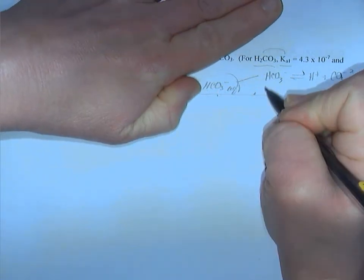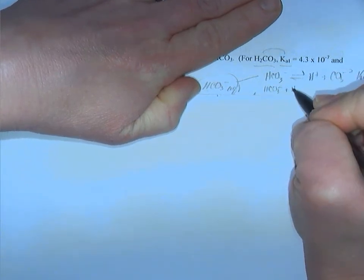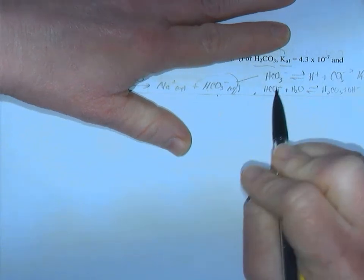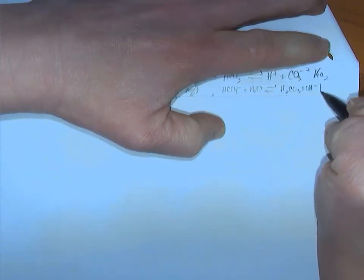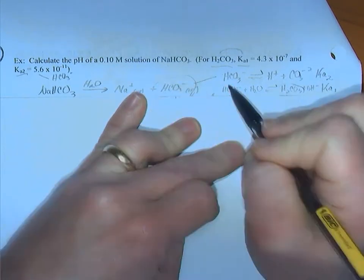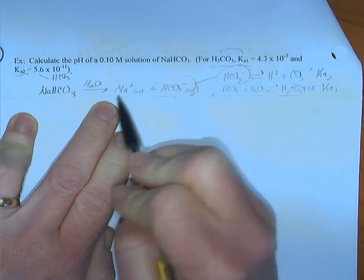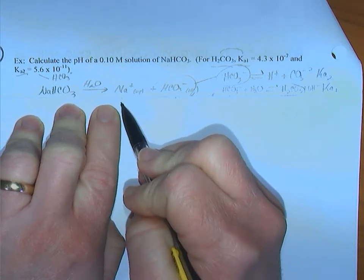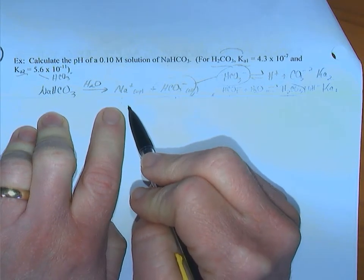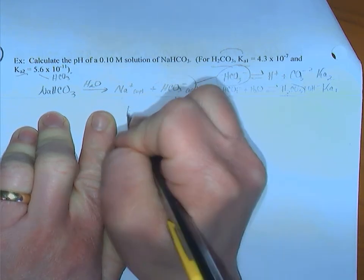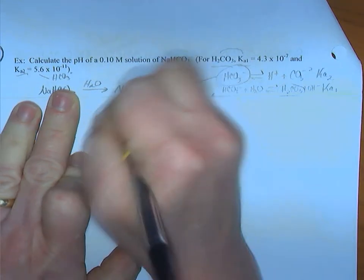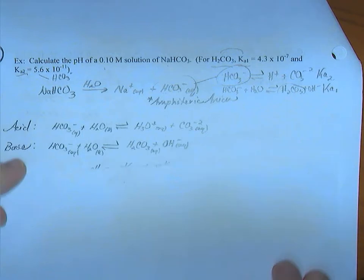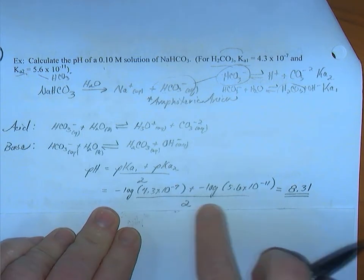Can HCO3⁻ also behave as a base? Yes — it carries a negative charge and can attract a hydrogen ion, forming H2CO3 and creating hydroxide. This base reaction produces H2CO3, which is described by Ka1. Sodium does not meet any criteria to behave as an acid or base. So with this amphoteric anion, concentration doesn't factor in — we simply take (−log Ka1 + −log Ka2) / 2 and we're done.